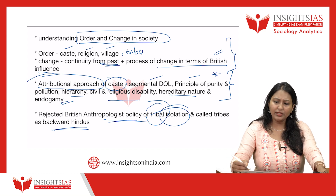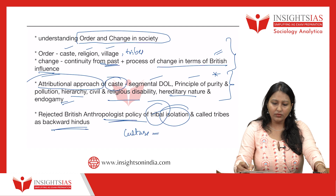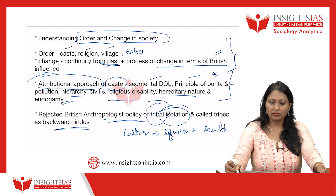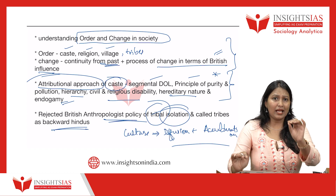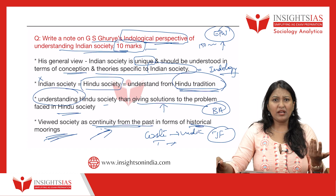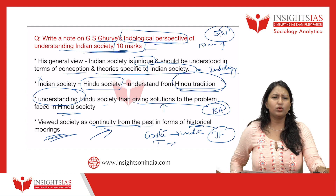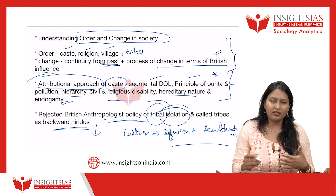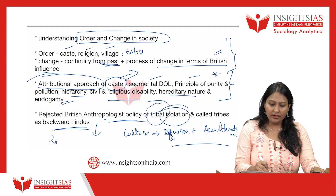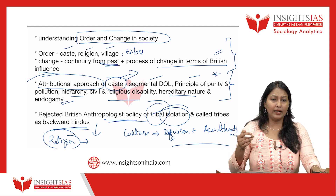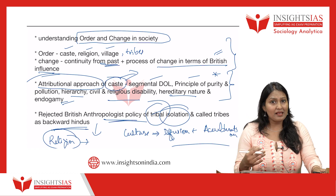If more space is available, you can write about culture — how Ghurye understood culture through diffusion and acculturation. For a 10-marker, write the key points; for a 20-marker, keep adding more points from Ghurye's perspective — more on tribes, more on caste, religion, Indian sadhu civilizations. It is based on how much space is left and how many marks are allotted.